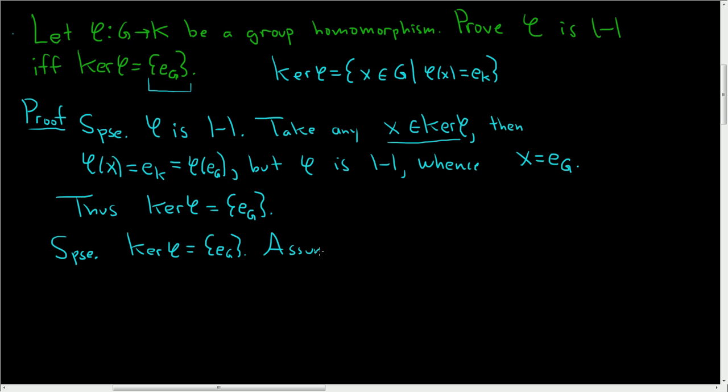Assume that φ(x) = φ(y) for some x, y in G. We have to show that x is equal to y.